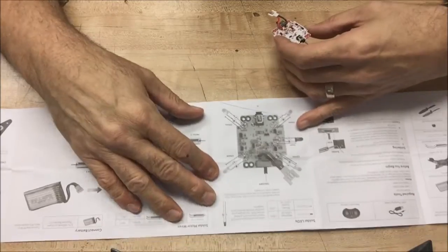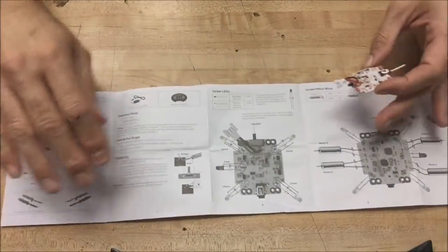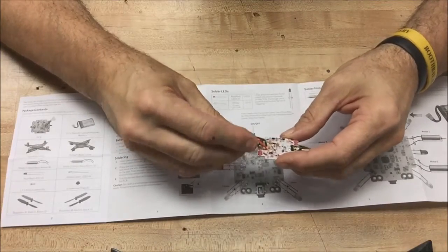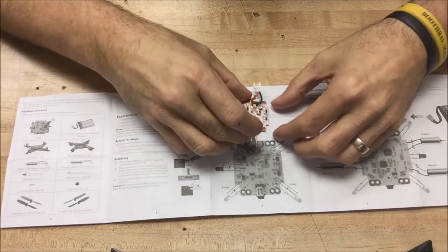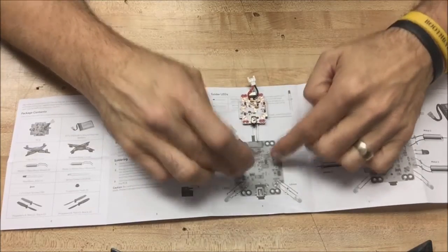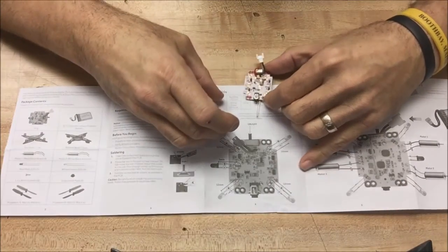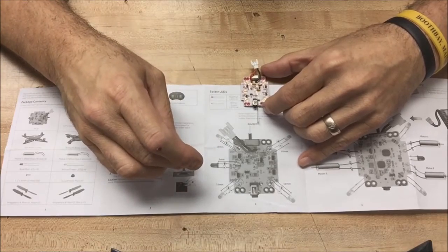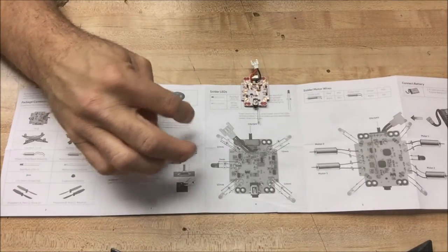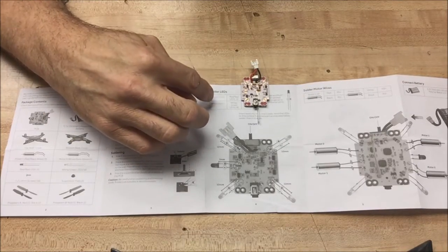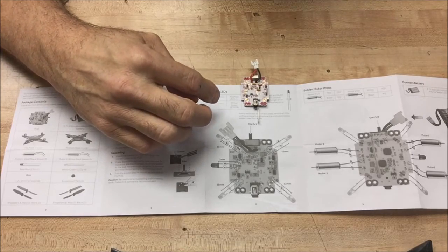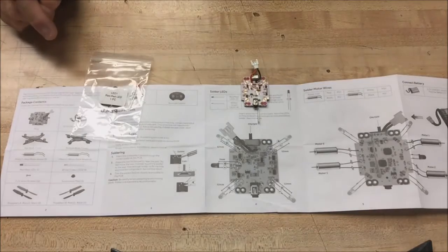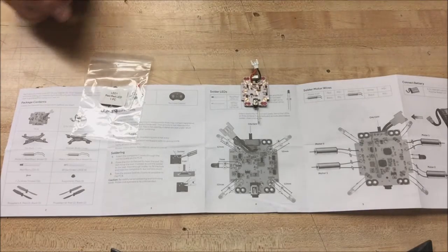So if we look at the instructions, I'll go ahead and turn them so that it's going to be... So what I want to do is set it up so that it's pretty much the same position as it shows on the directions there. And we're talking about our LEDs. I need the red LED and then I need the white LEDs.